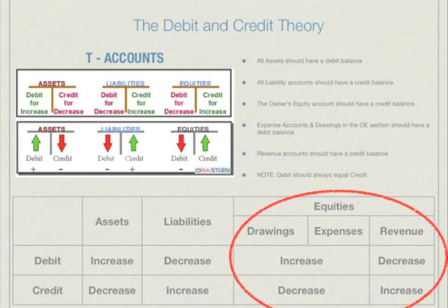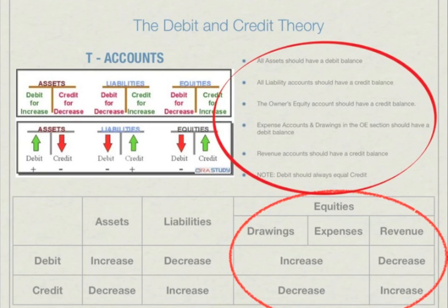Revenue is also debited in the bank account. Because of these theories, all assets should have a debit balance, all liability accounts should have a credit balance, the owner's equity account should have a credit balance, expense accounts and drawings should have a debit balance, and revenue accounts should have a credit balance. Remember, the total value of the debit side should equal the total value of the credit side if accounting has been done correctly — this will be discussed further when we cover the trial balance.